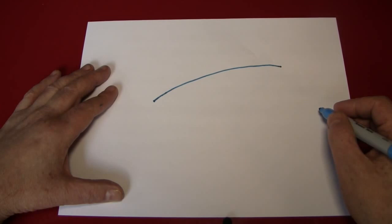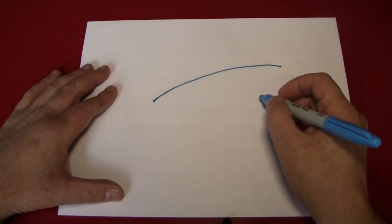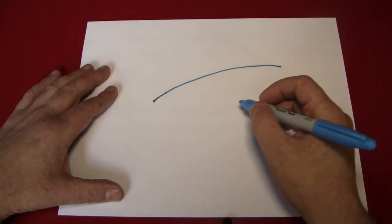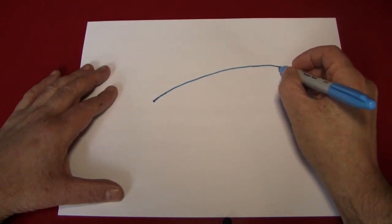Next, what we are going to want to do is create a mirror or complementary line to complete the cigar shape.